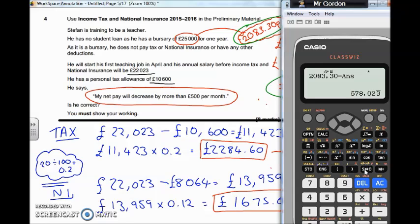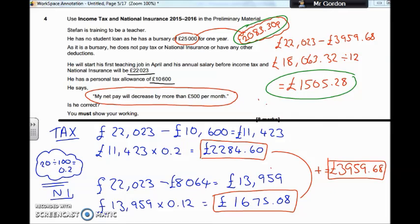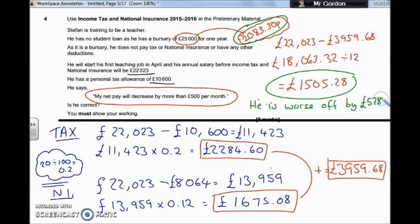In true Core Maths fashion, we need to write that down. I would write: he is worse off by £578 — give the pence as well. Then write that in a full sentence, because in Core Maths it's important that we explain our answers. We must show our working and write in sentences. That's your conclusion. I hope that helps you get through that question.